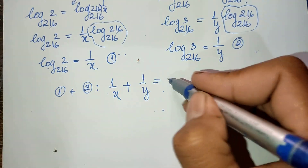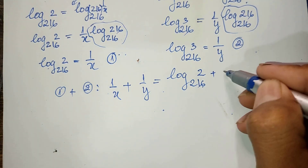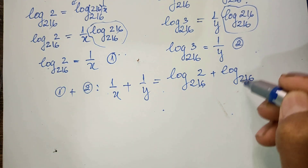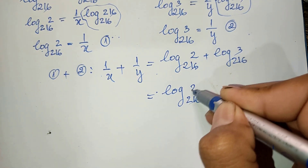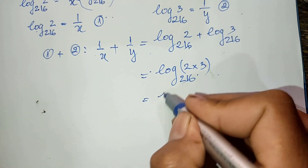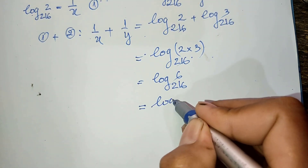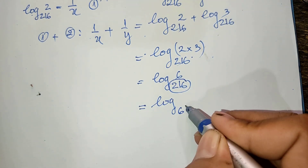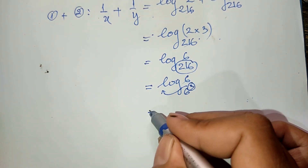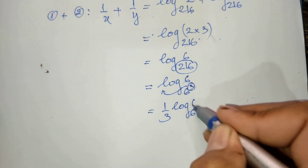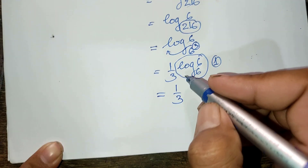Now I add 1 divided by 8 and 1 divided by y. This equals log base 216 of 2 plus log base 216 of 3. Using the log addition property, this equals log base 216 of 2 times 3, which is log base 216 of 6. Now since 216 equals 6 cubed, I bring the exponent 3 in front: I get 3 times log base 6 of 6, but rewritten as 1 divided by 3 times log base 6 of 6, which equals 1 divided by 3, since log base 6 of 6 equals 1.